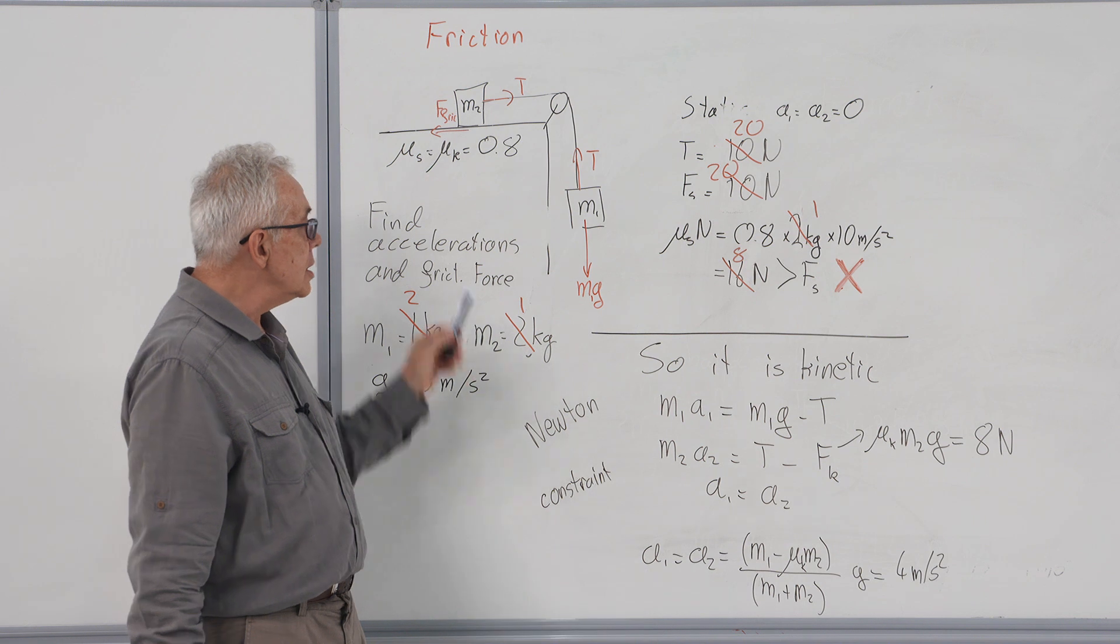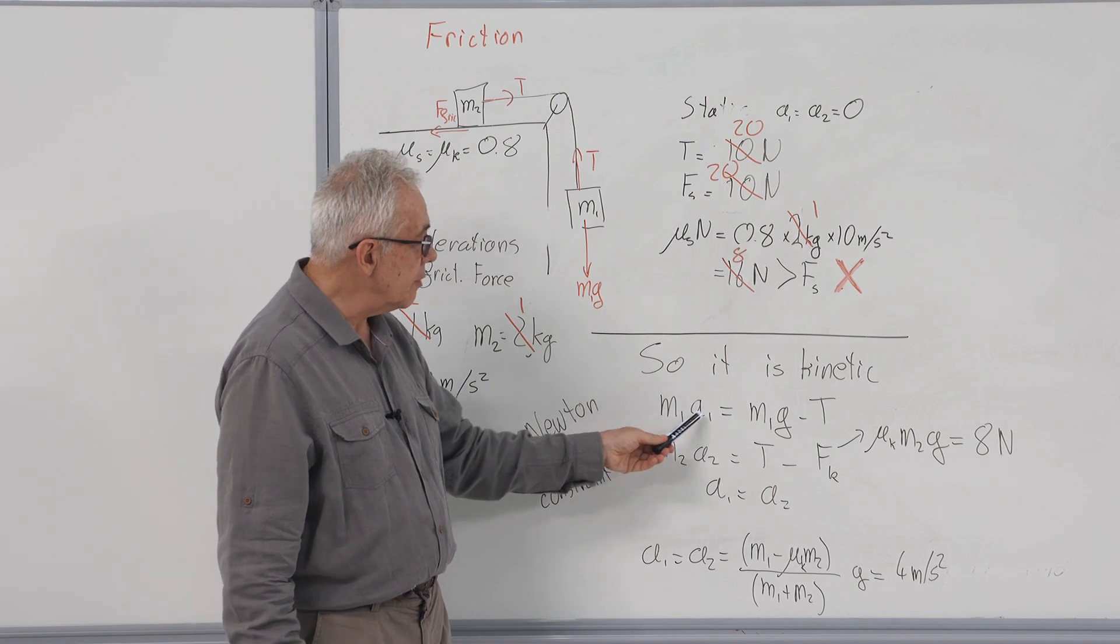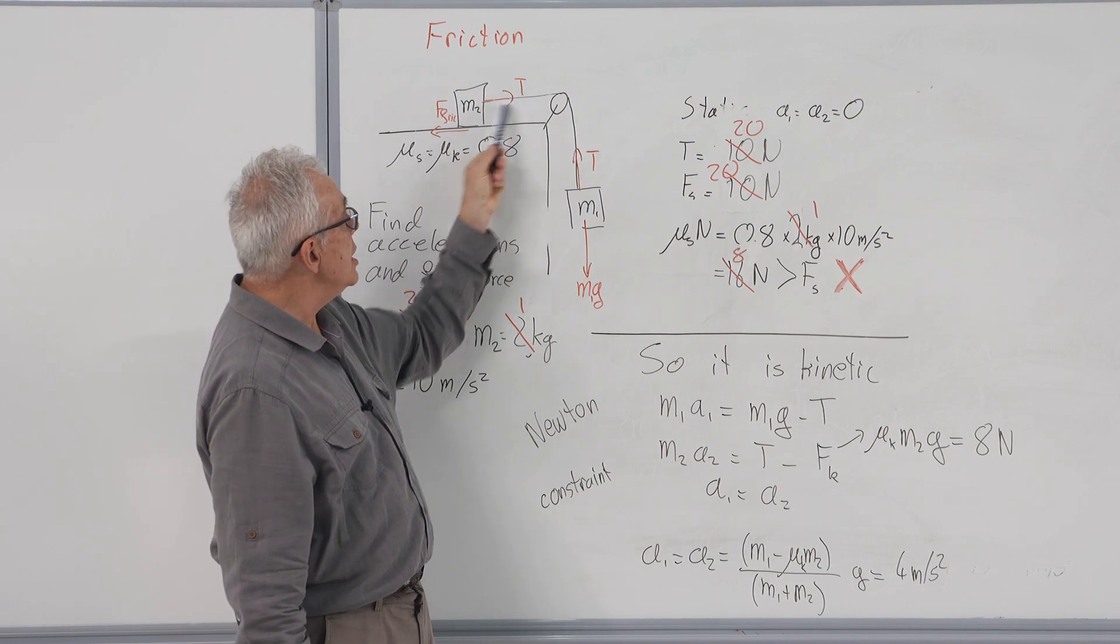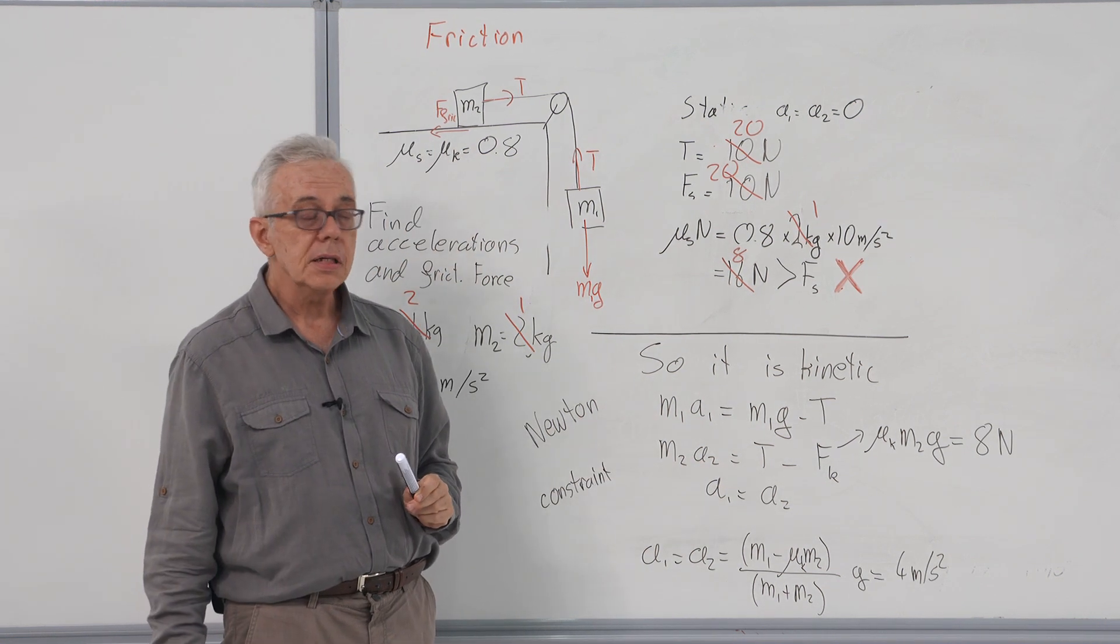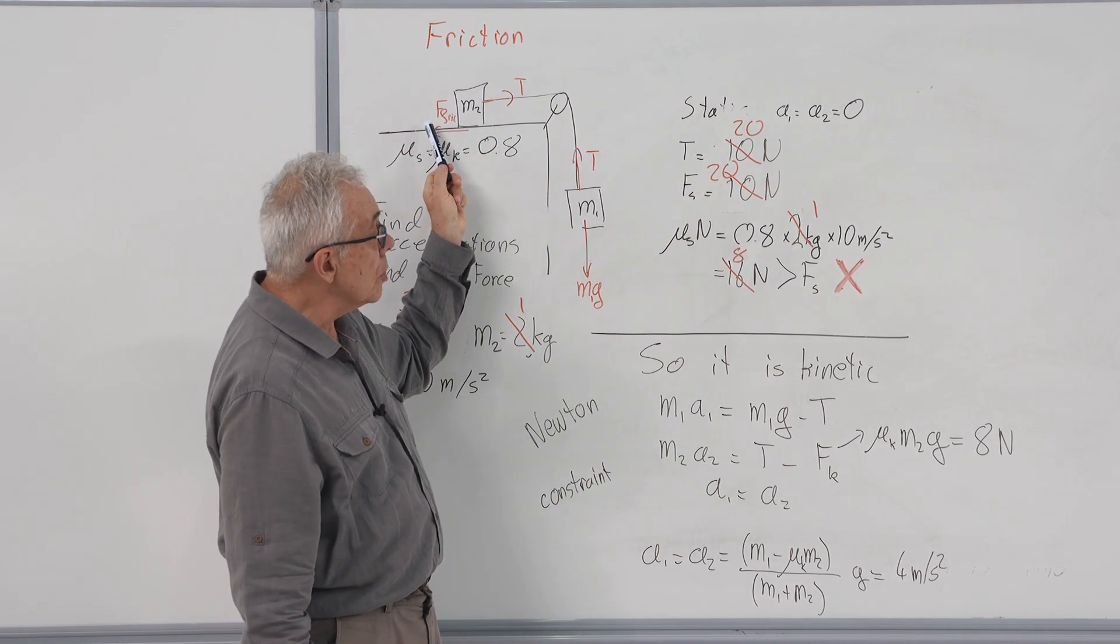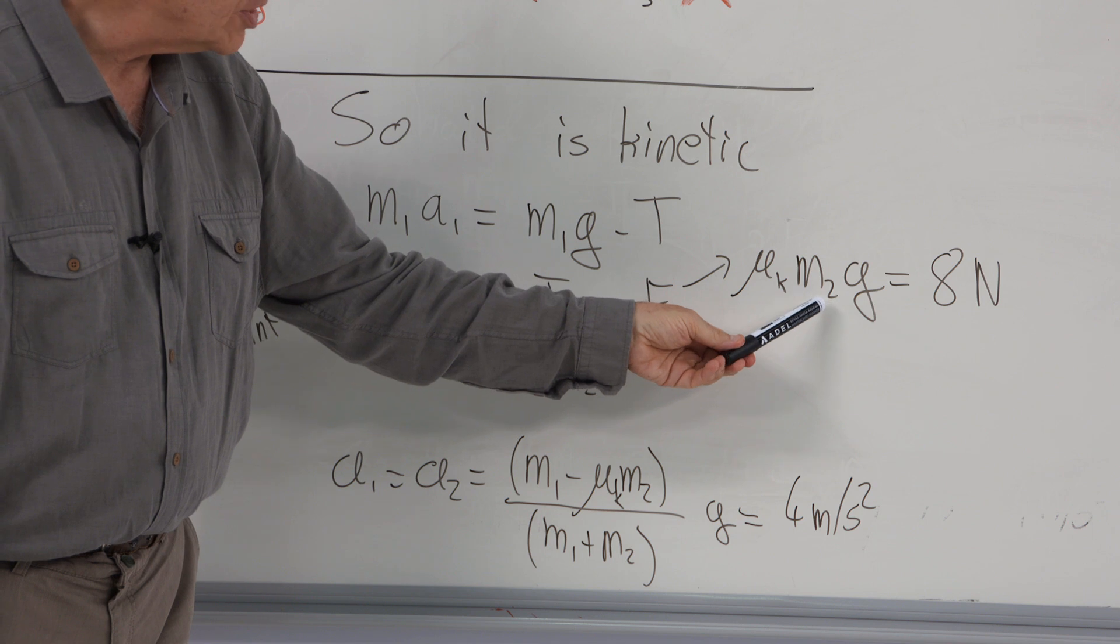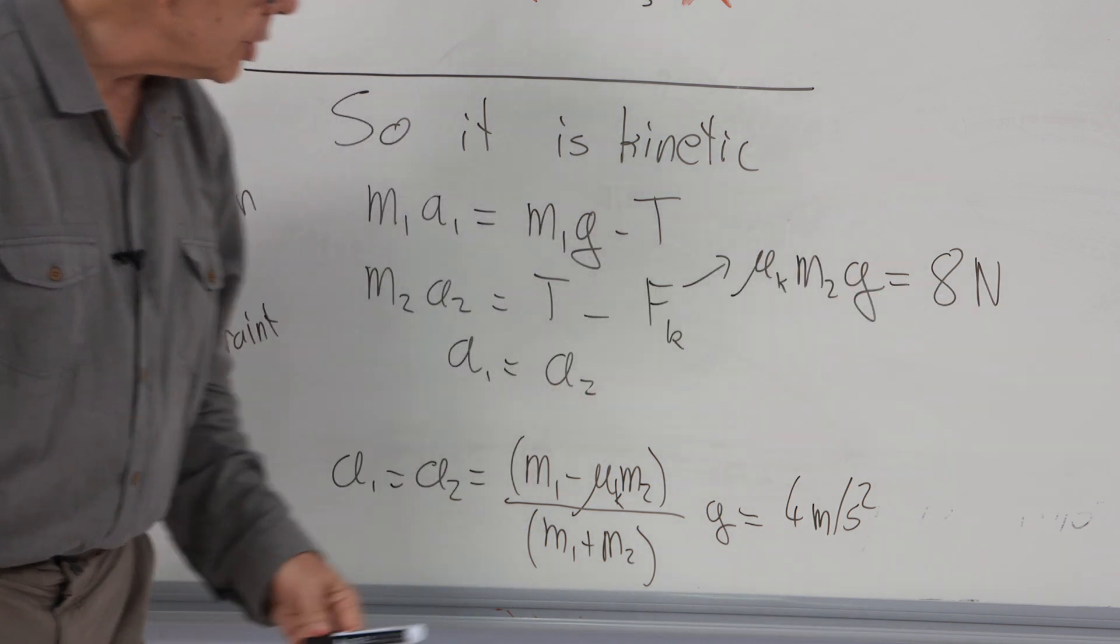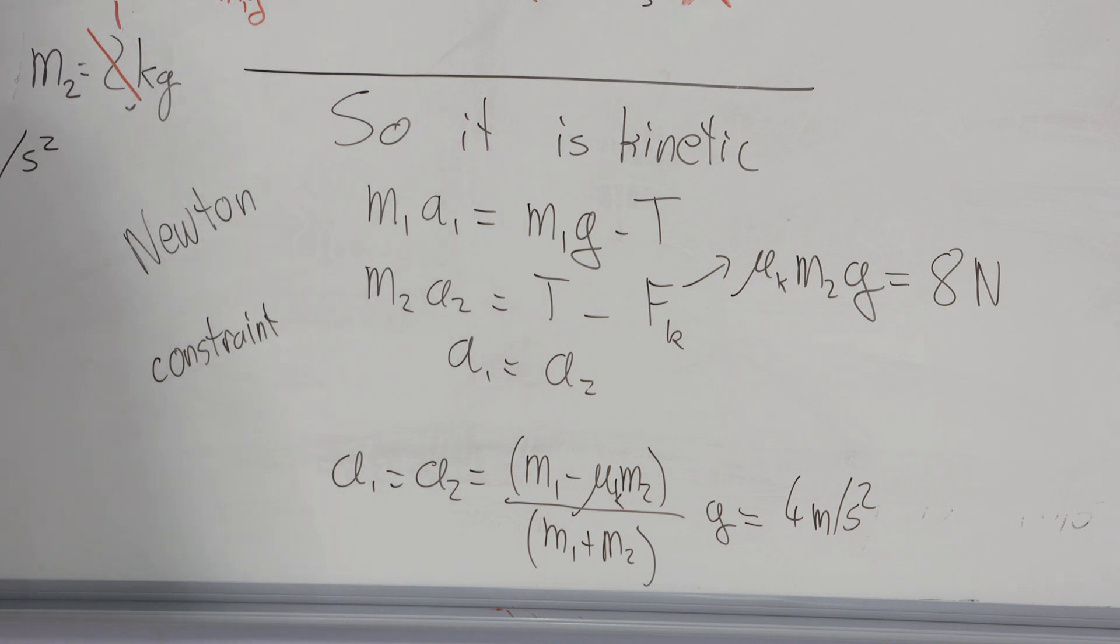Then we solve the kinetic equations. We have the free body diagrams. The Newton's laws are M1A1 is M1G minus T. M2A2 is T minus F friction, and our constraint is that the accelerations are equal. Solving this, I note that the kinetic frictional force is mu times normal. So 0.8 times 1 kilogram times 10 meters per second squared is 8 newtons. And putting it there, I get acceleration as 4 meters per second squared.